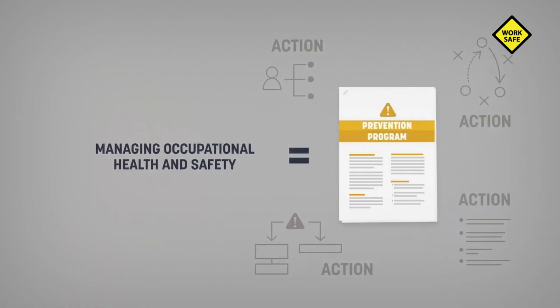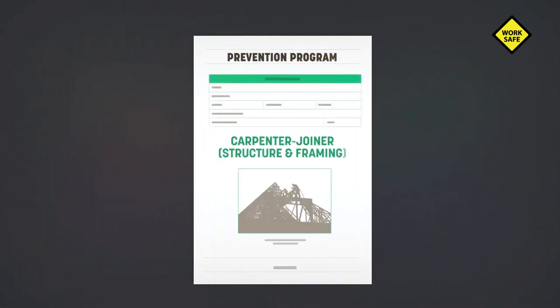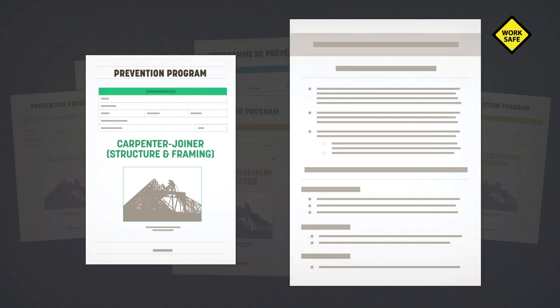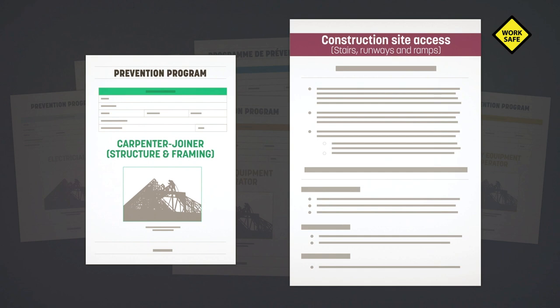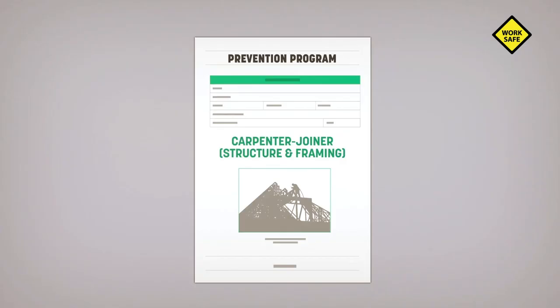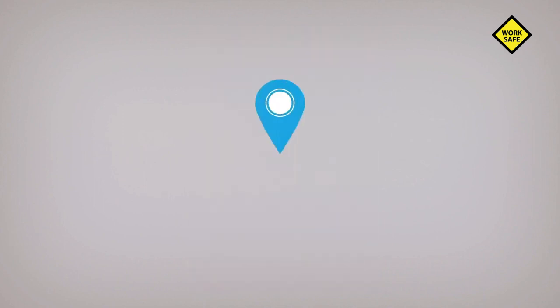Managing occupational health and safety means implementing a prevention program — an action plan adapted to your reality. You have access to a number of existing prevention programs in every type of construction trade. Each program has its own set of action sheets. Each sheet identifies a risk that could be present on your job site, with details of what preventive measures and control methods you can put in place to protect your workers.